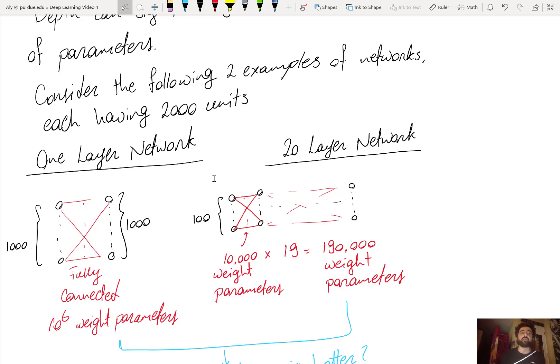So let's say I have 2,000 neurons in a one layer network, so 1,000 to 1,000, and I have a fully connected layer between them. That means I have 1,000 times 1,000 weight parameters or 1,000,000 weight parameters.